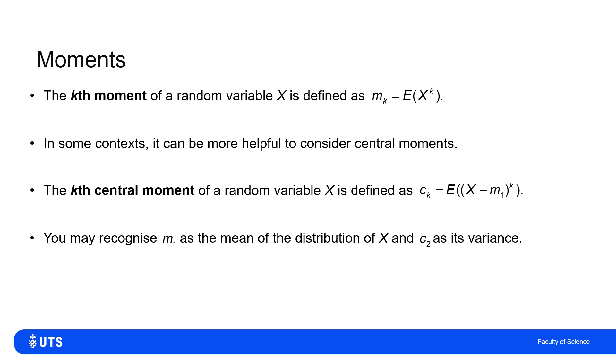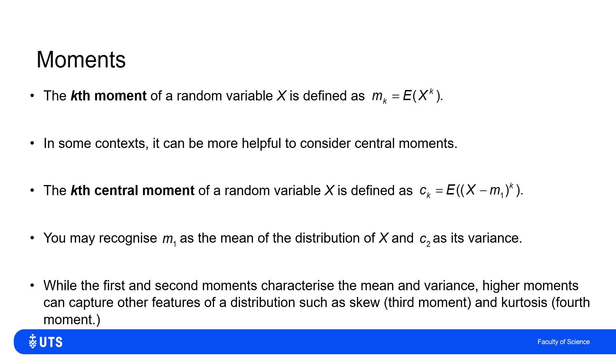A couple of these are, I hope, quite familiar. The first moment of a distribution is the mean. The expected value of X to the 1 is the expected value of X, which is its own mean. And the second central moment is the variance. The second moment is the expected square, expected value of X squared. But the second central moment is the expected squared distance around the mean. And so is the variance.